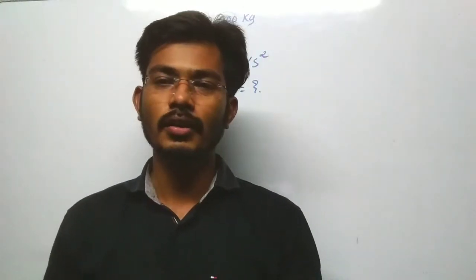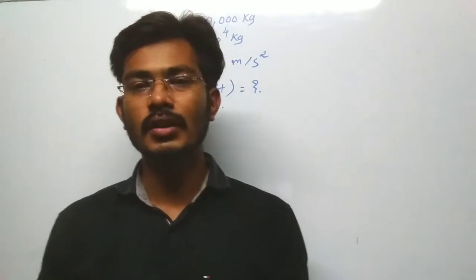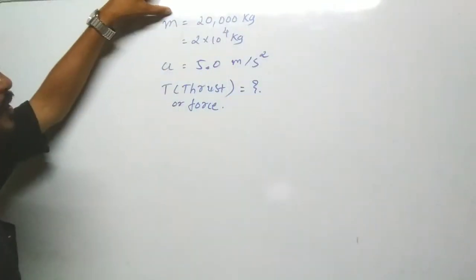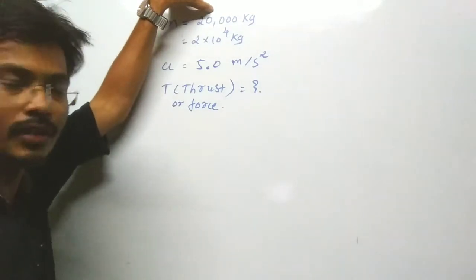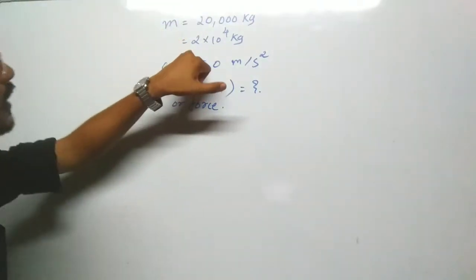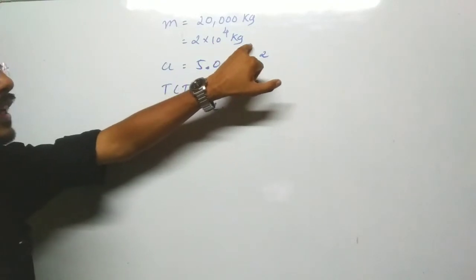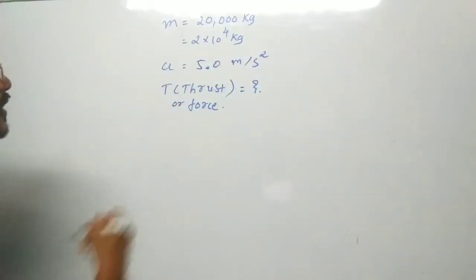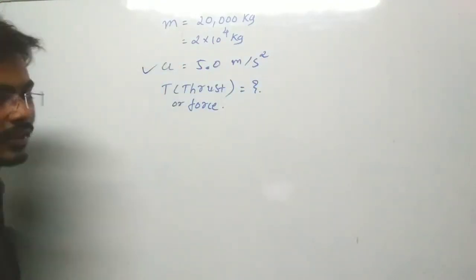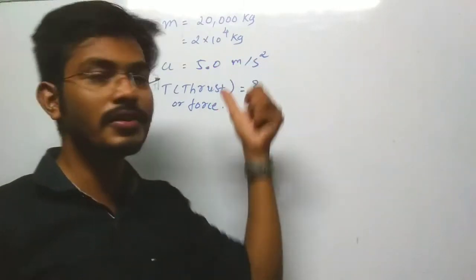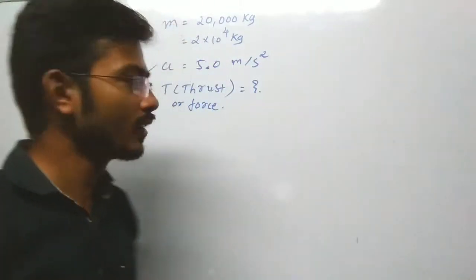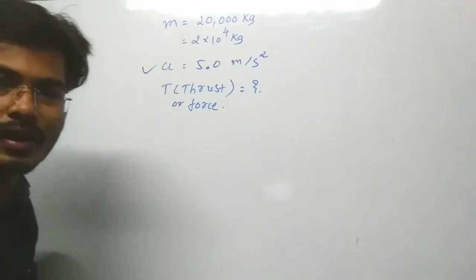Given data: m = 20,000 kg = 2×10⁴ kg, and acceleration = 5.0 m/s². What we have to find out is the thrust.